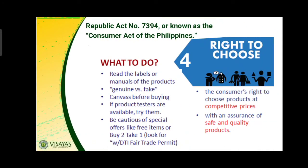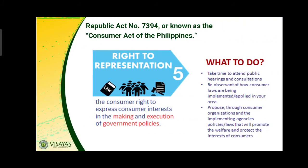The fourth right is the right to choose — the consumer's right to choose products at competitive prices with assurance of safe and quality products. Consumers should read labels to distinguish genuine from fake products, try product testers when available, and be cautious of special offers like free items or buy-two-take-one promotions. If there are sales promotions, they must have a DTI permit number.